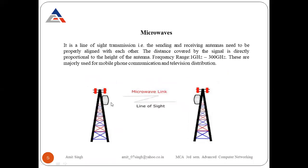The second type is microwaves. It is a line-of-sight transmission, meaning the sending and receiving antennas must be properly aligned with each other. The distance covered by the signal is directly proportional to the height of the antenna — that is why you see towers and antennas placed at the tops of buildings in cities, requiring maximum height to transfer signals. The frequency range of microwaves is from 1 gigahertz to 300 gigahertz, and they are majorly used for mobile phone communication and television distribution.